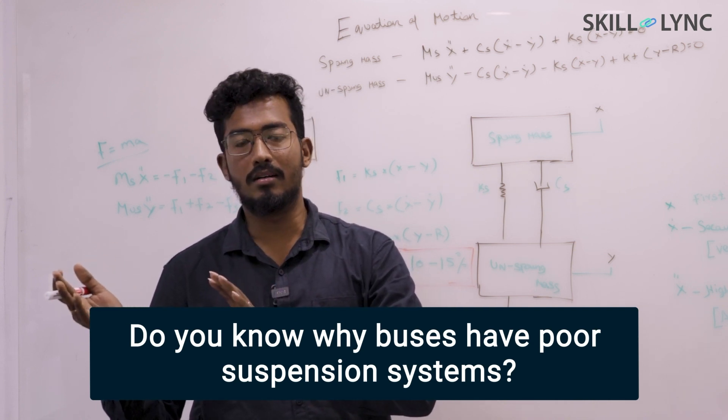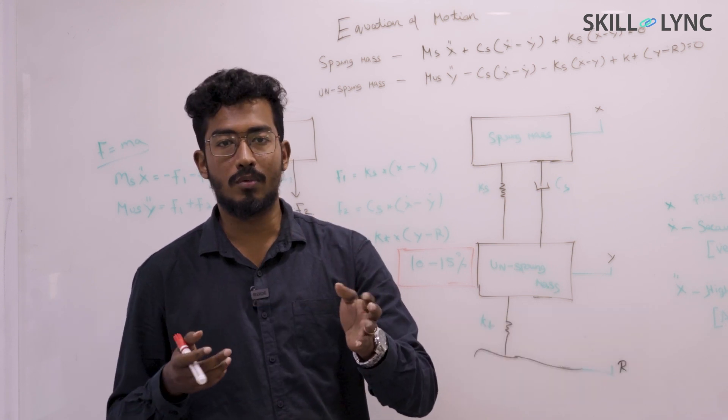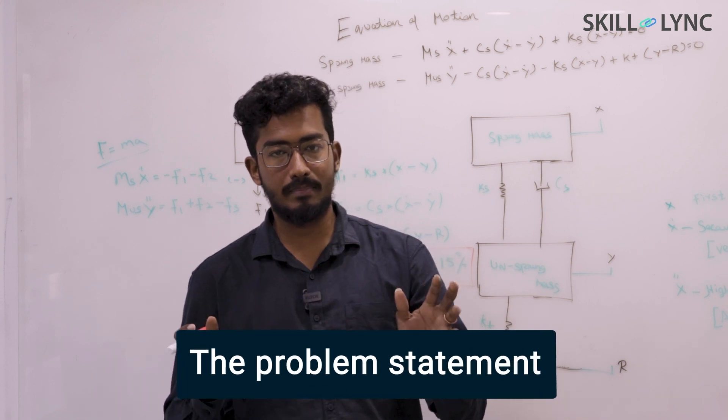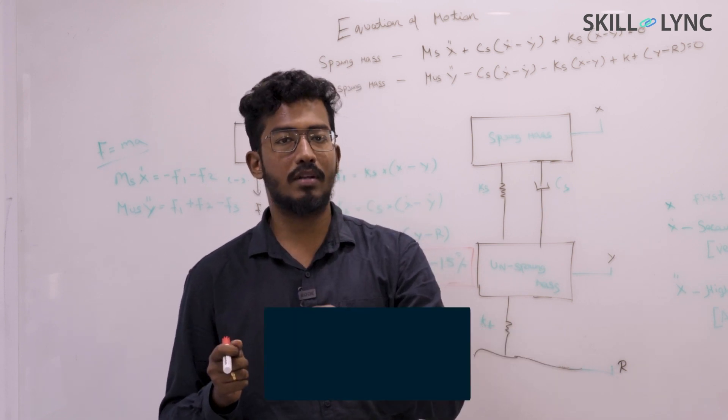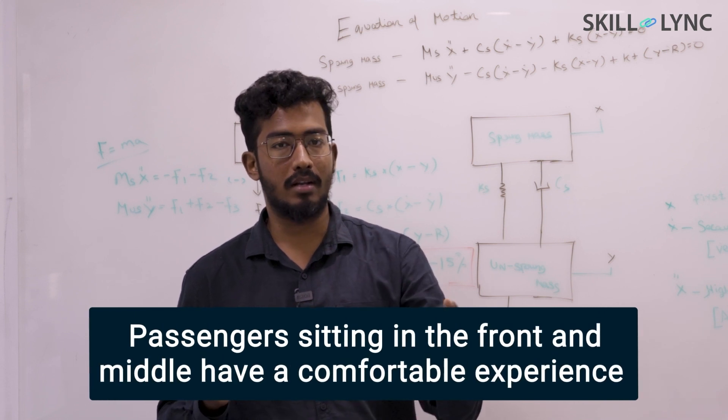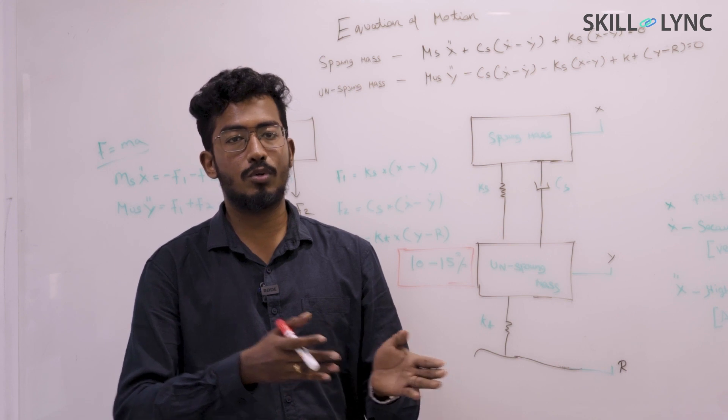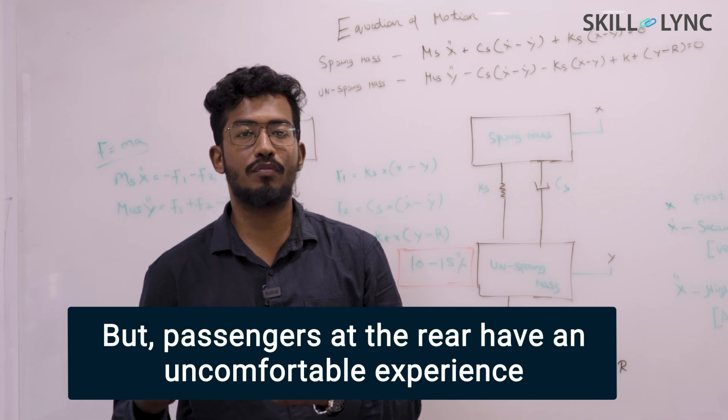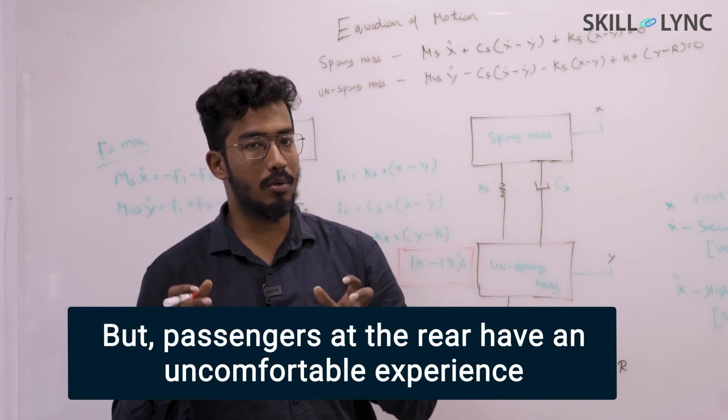The question is very simple: whenever you sit in the buses, in the front or the middle, you won't experience so much of a bump. But when you go towards the edge of the vehicle, whenever the driver gets into a bump, all of a sudden you feel a jerk. Try to think about it - why is it so?